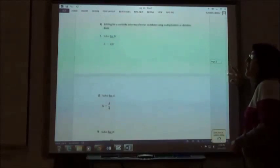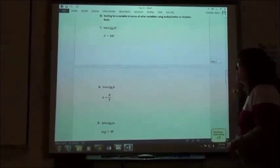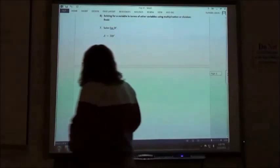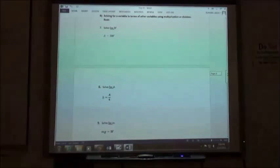We're going to do the same thing with the multiplying and dividing steps that we had before. So if I have A equals 3W and I'm going to solve it for W, what am I going to do with that 3?